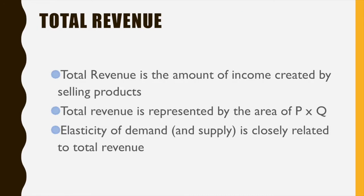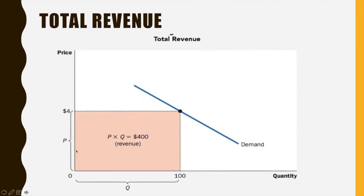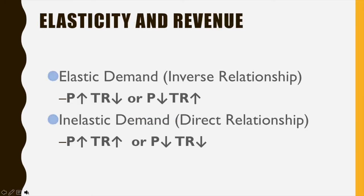Elasticity is very important because it's closely related to total revenue. Total revenue is the amount of income you get from selling a product. If you're a business owner, it's definitely to your advantage to understand the elasticity of demand for your product. Total revenue equals price times quantity sold — for example, selling a good for $4 with 100 units sold gives total revenue of $400.